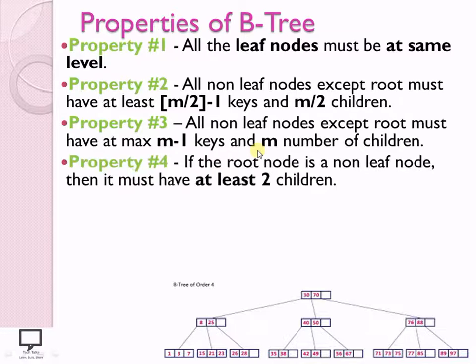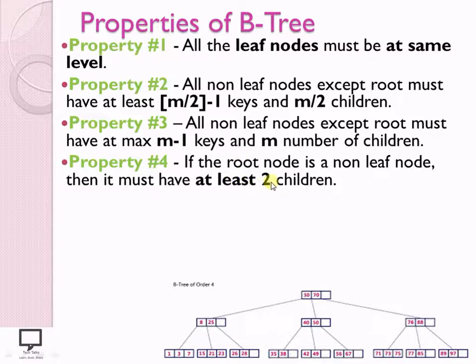Property 4 states that if the root node is a non-leaf node, it must have at least 2 children. We consider that at least one key value must be present in the root node, and if one key is present, it will have at least 2 children — a left child less than the root and a right child greater than the root.